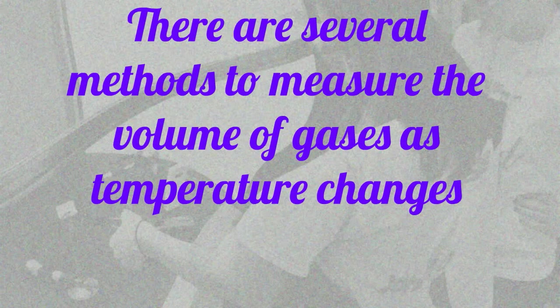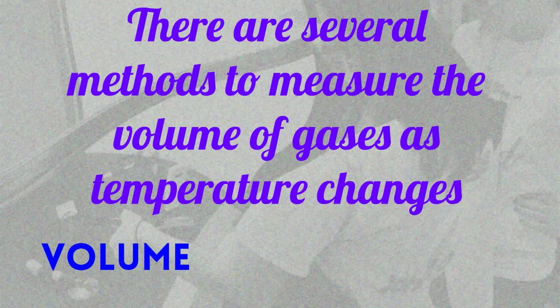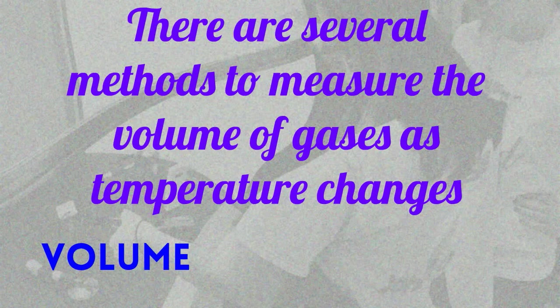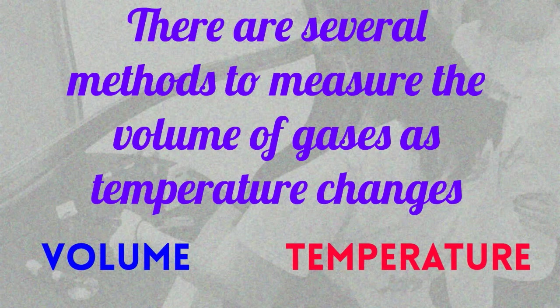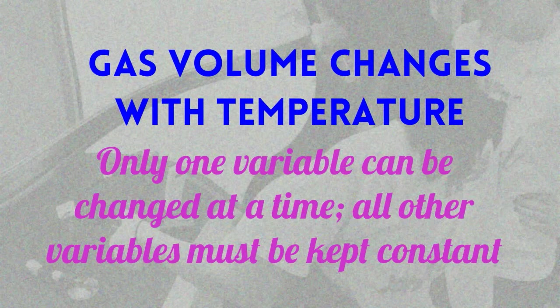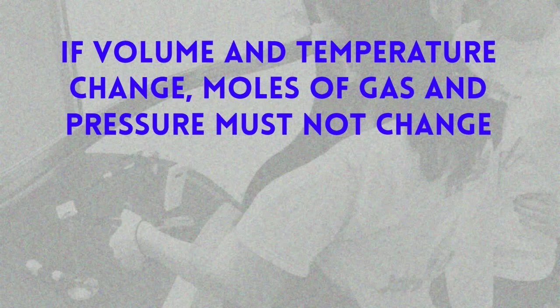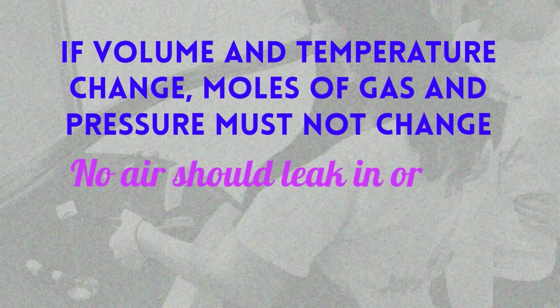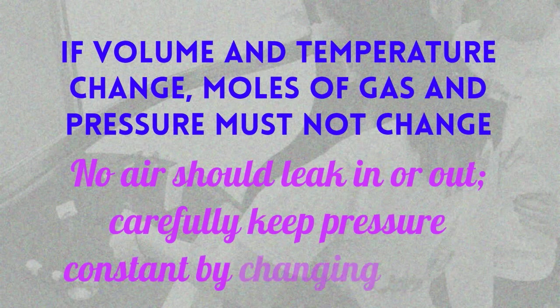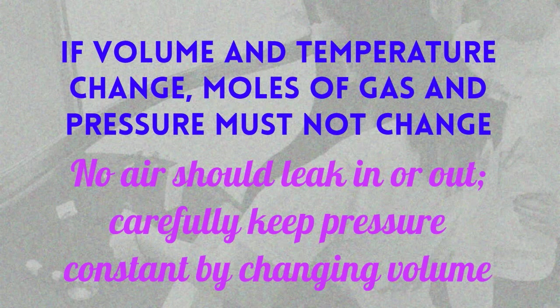We can use a number of methods to measure the volume of air or another gas as the temperature changes. When we investigate how the volume of a gas changes with changing temperature, we have to keep all other variables constant. So we make sure no air leaks in or out, and we keep the pressure from changing by carefully monitoring it with a sensor, varying the volume so it stays constant.